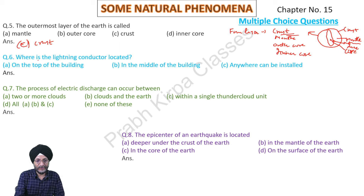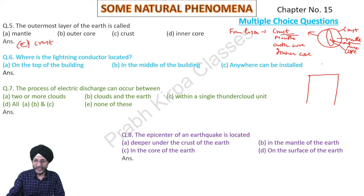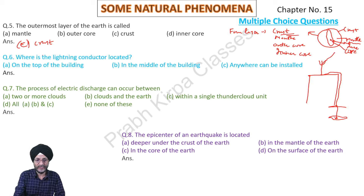Question 6 MCQ: Where is a lightning conductor located? On the top of the building. The lightning conductor is located on the top of the building; from there a wire is attached which goes to the earth where a plate is buried inside. The lightning passes from the lightning conductor to the earth and the building is safe. Our answer is A — on the top of the building.